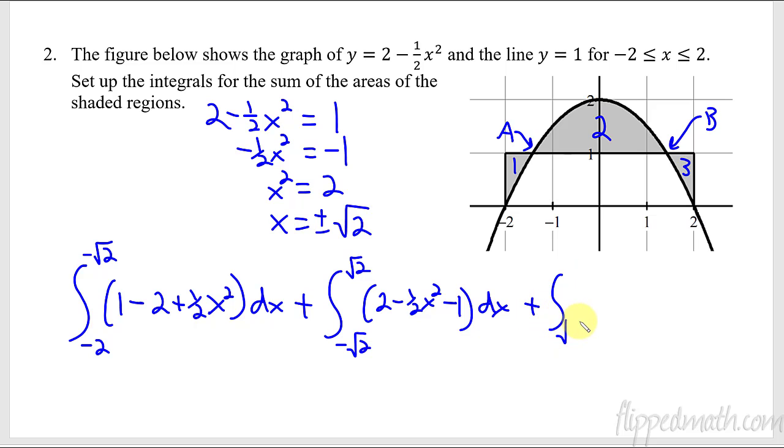And then my last region, I'll have my square root of two. And I go up till I get to two. And which one is first? The line is first. So one minus. And then I do the same thing that I just had right there.